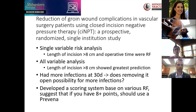Single variable risk analysis showed that incision lengths greater than eight centimeters and longer operative time were risk factors associated with higher risk of wound infections. Patients tend to have more infections at 30 days. A scoring system was developed — if patients scored eight or more points based on multiple risk factors, those patients would benefit from using a Prevena. High-risk factors included reoperative surgery, prosthetic vascular graft, age greater than 50, BMI greater than 30, significant pannus, malnutrition, smoking, immunosuppression, cardiac risk factors, COPD, uncontrolled diabetes with A1C greater than 8, chronic kidney disease, and dyslipidemia.